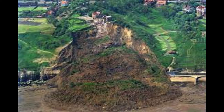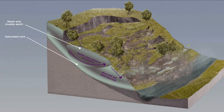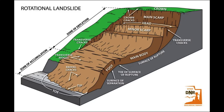Rotational landslides can be dangerous and destructive, causing property damage, injuries, and even fatalities. To minimize the risk, it is important to avoid building structures on steep slopes, stabilize slopes using retaining walls and drainage systems, and monitor slopes for signs of instability such as cracking or bulging. These measures can reduce the likelihood of landslides and their associated impacts, ensuring the safety of those living in or near areas prone to rotational landslides.